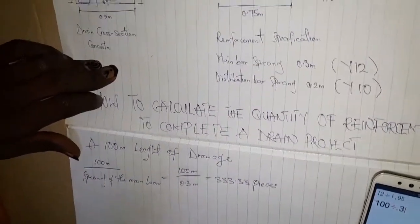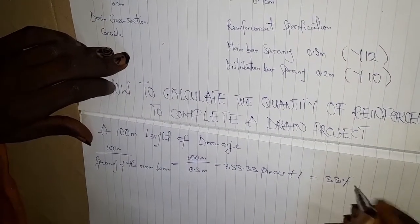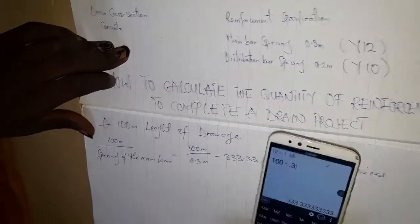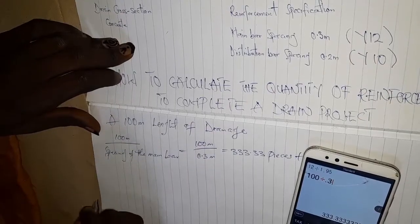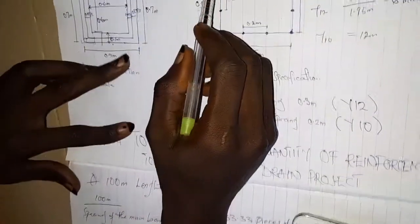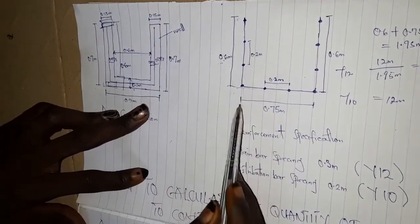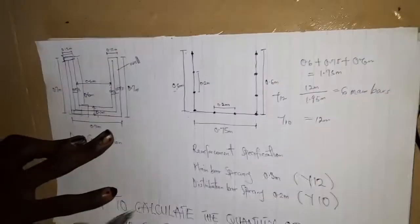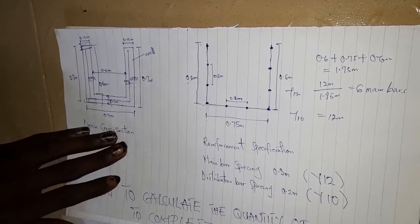Adding one for the starting piece gives us 334 pieces of main bar members. For the distribution bar with spacing of 0.2 meters, counting the bars per basket gives us 10 distribution bars attached for one basket of the reinforced drainage reinforcement.